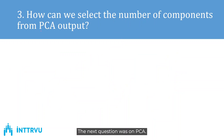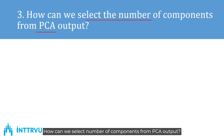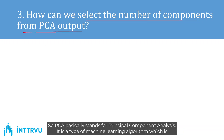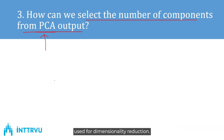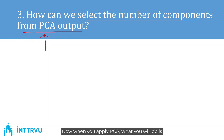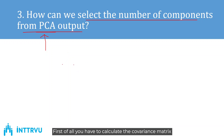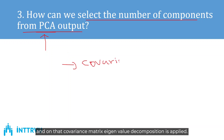The next question was on PCA — how can we select the number of components from PCA output? PCA stands for Principal Component Analysis; it's a type of machine learning algorithm used for dimensionality reduction. When you apply PCA, based on the feature matrix you have, you first calculate the covariance matrix, and then eigenvalue decomposition is applied on that covariance matrix.